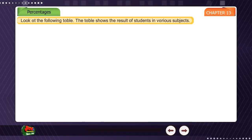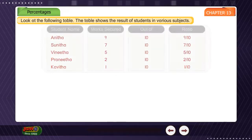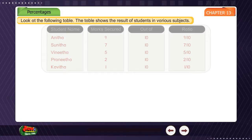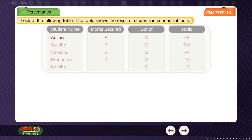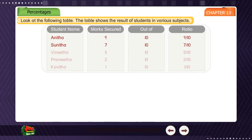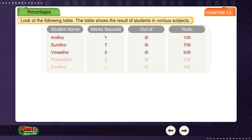Look at the following table. The table shows the result of students in various subjects. Student name, mark secured, out of, ratio: Anitha — 9 out of 10, ratio 9/10. Sunitha — 7 out of 10, ratio 7/10. Vinitha — 5 out of 10, ratio 5/10. Pranitha — 2 out of 10, ratio 2/10. Kavitha — 1 out of 10, ratio 1/10. The ratio we get may be expressed with 100 as denominator.